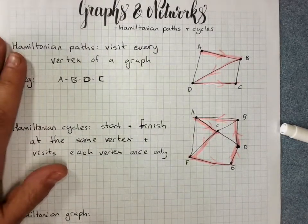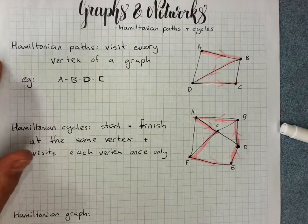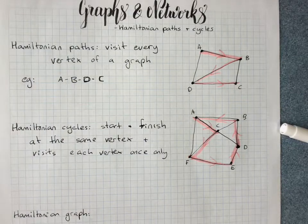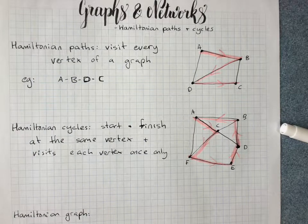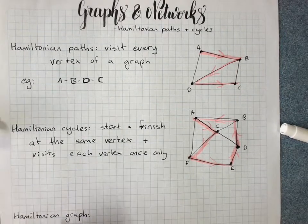If a graph contains a Hamiltonian cycle, it is called a Hamiltonian graph.